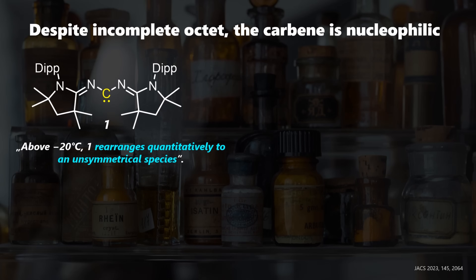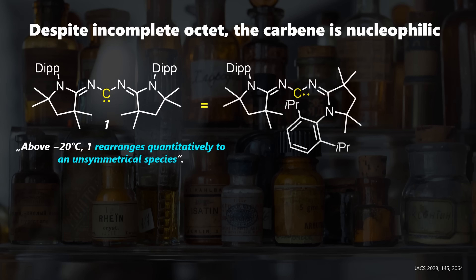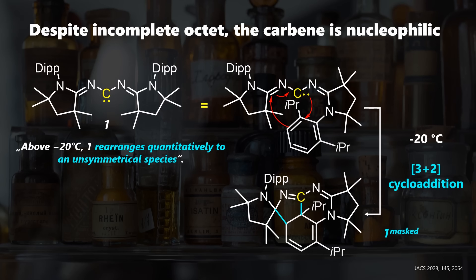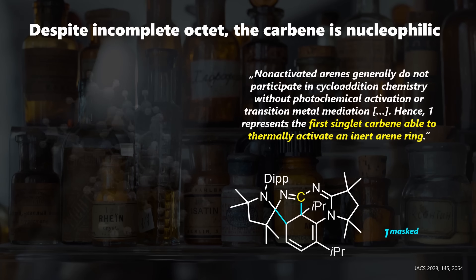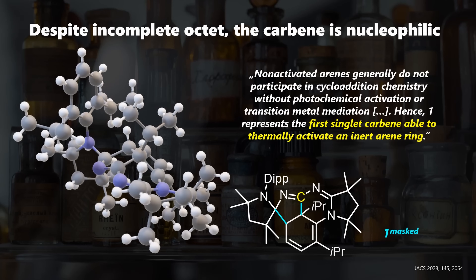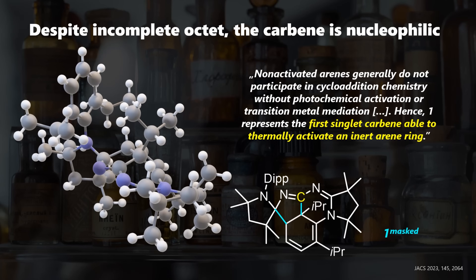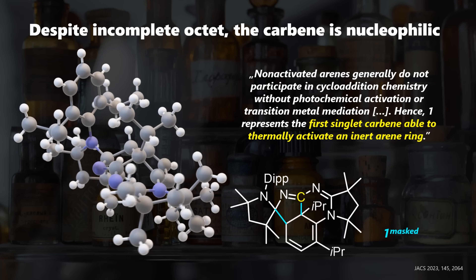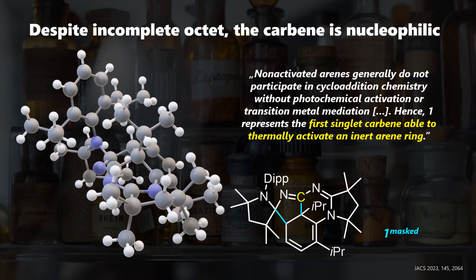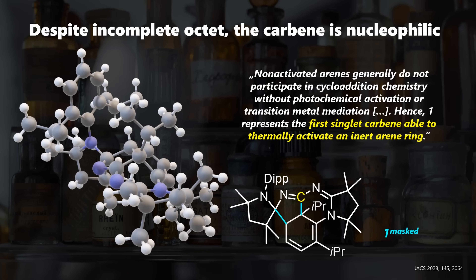It's stable at minus 78 degrees, but above minus 20 it was found to rearrange. Never forget the groups behind abbreviations on paper, because it's actually the aryl ring which undergoes a de-aromatative 3+2 cycloaddition with the carbene system. This is pretty unusual because the aromatic ring is not activated, but the carbene is so nucleophilic that it doesn't care, leading to the highly sterically congested adduct.